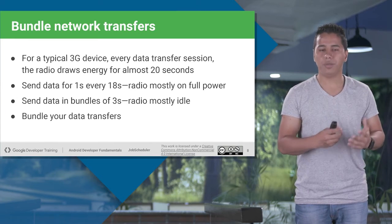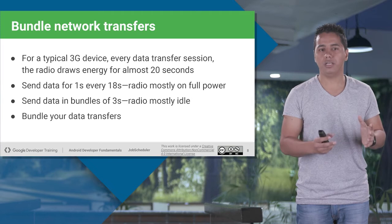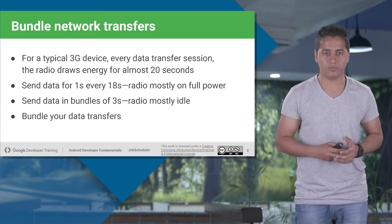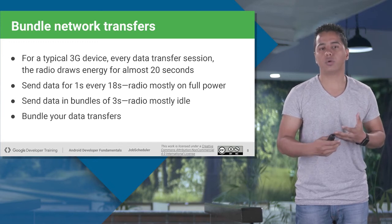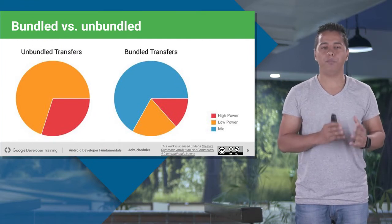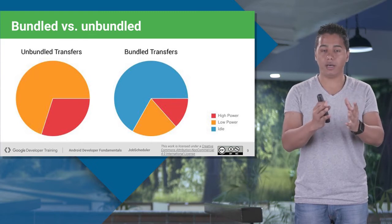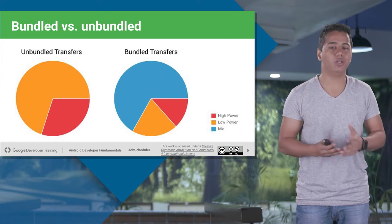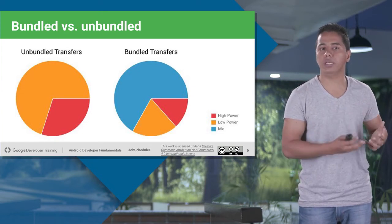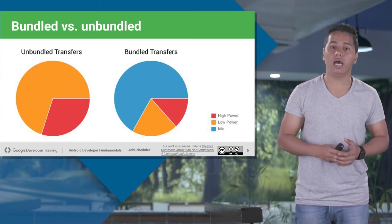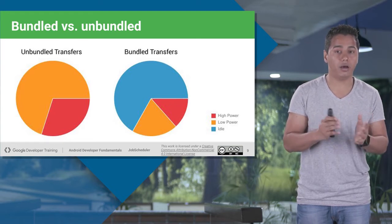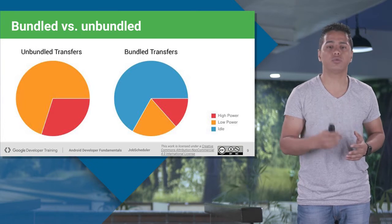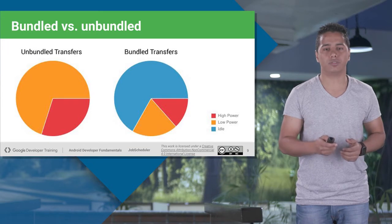Whenever you want to transfer data — typically in 3G devices — you want to bundle your data together. If you try to send each piece of data separately, it will take more time plus more resources. So it's good practice to bundle your data together over the network. Comparing bundled and unbundled data: if your data is unbundled, it will mostly be in high power or low power state, with very little idle time. But if you transfer data in a bundled way, there is a significant amount of idle state, plus savings in resources and battery.